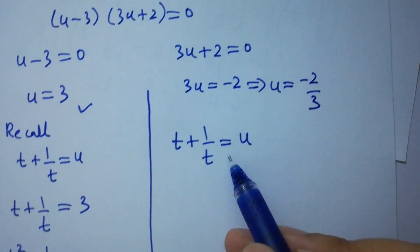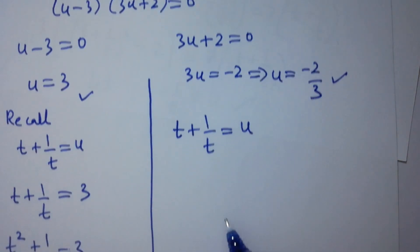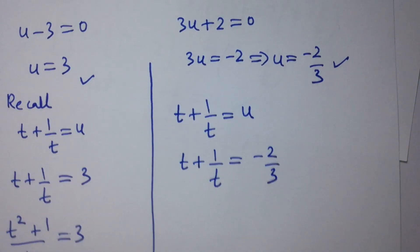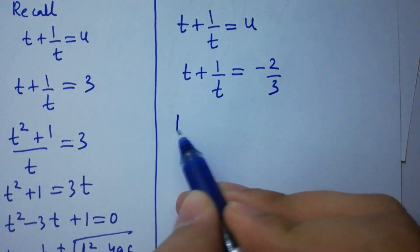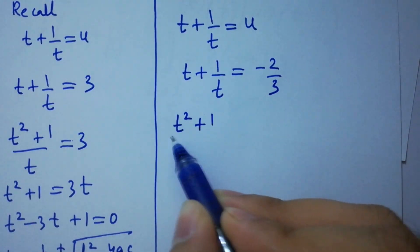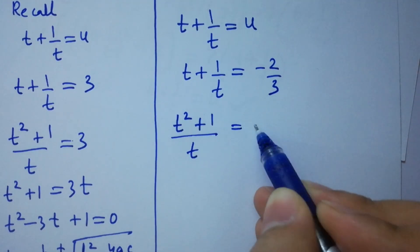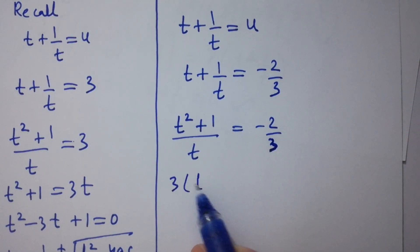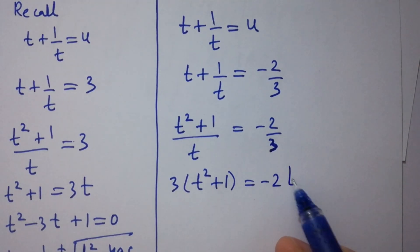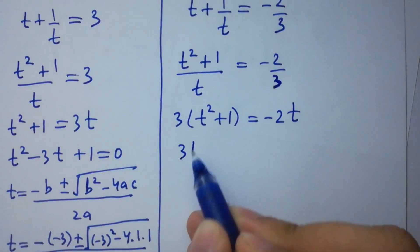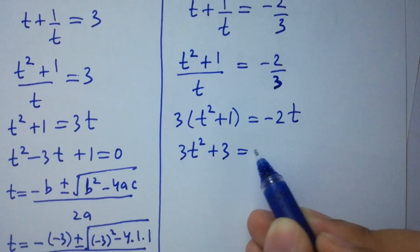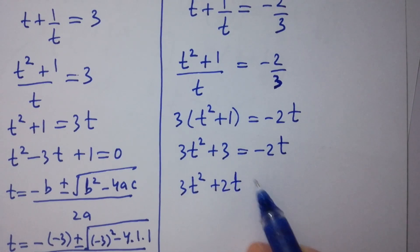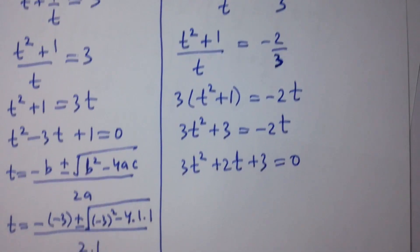Now take t plus 1 over t equals minus 2 over 3. Simplifying, t squared plus 1 over t equals minus 2 over 3. By cross multiplication, 3 times t squared plus 1 equals minus 2t, so 3t squared plus 2t plus 3 equals 0. Apply the quadratic formula.